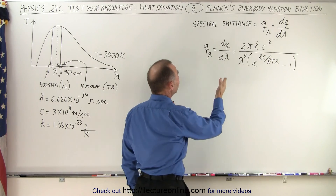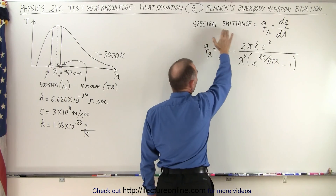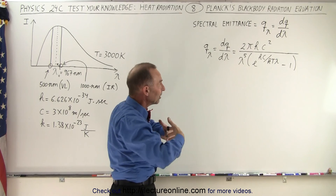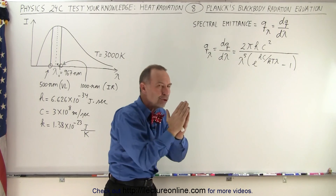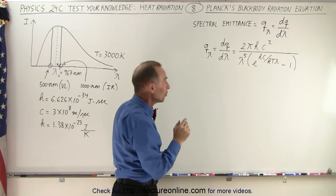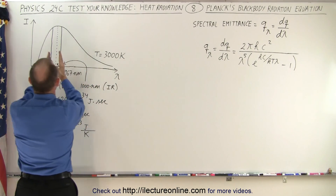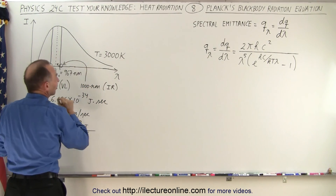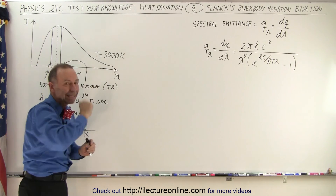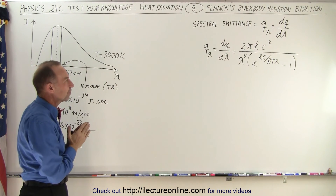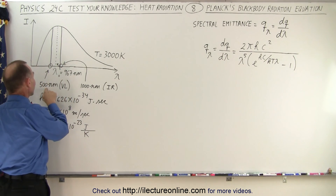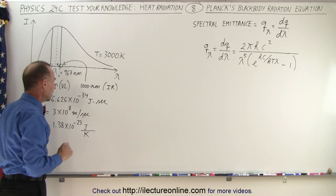Notice it calculates what we call the spectral emittance — the amount of energy radiated per unit wavelength. So you can see that we can coordinate this off in little slices, and we can calculate the dQ/dλ within each of those slices. We're going to do it for two different wavelengths: 500 nanometers and 1,000 nanometers.